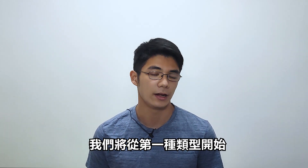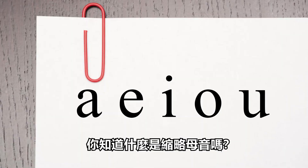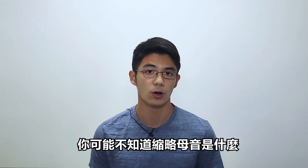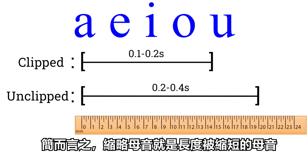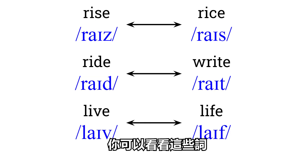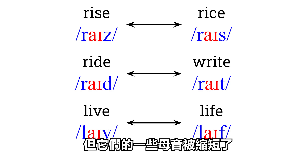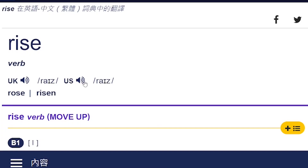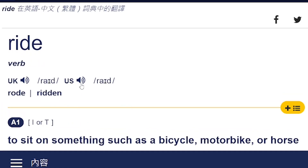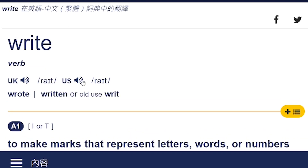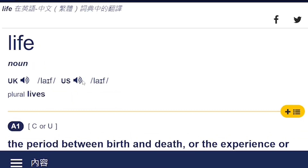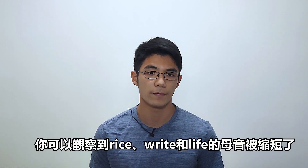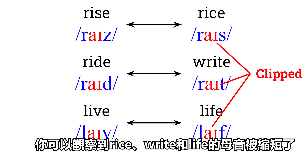We're going to start with the first type. Do you know what is a clipped vowel? If you didn't study phonology, you may not know what a clipped vowel is. Simply put, a clipped vowel is a vowel whose length is shortened. You may look at these pairs of words — they all have the same vowel, but some of their vowels are clipped. You can clearly observe that the vowel of rice, right, and life are clipped.